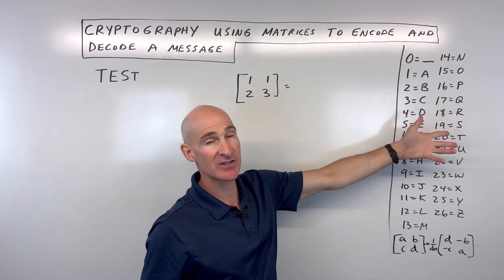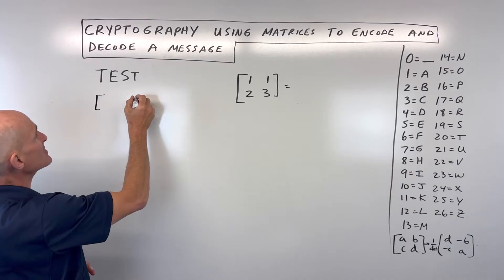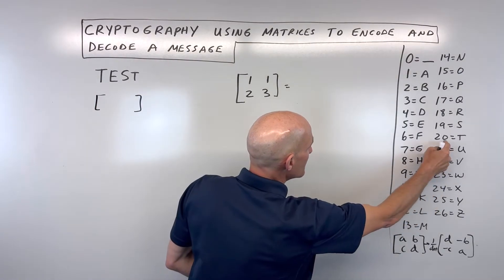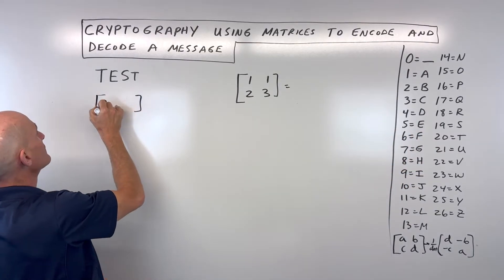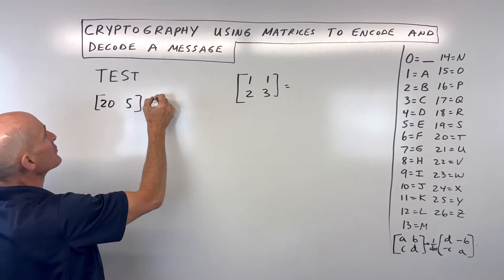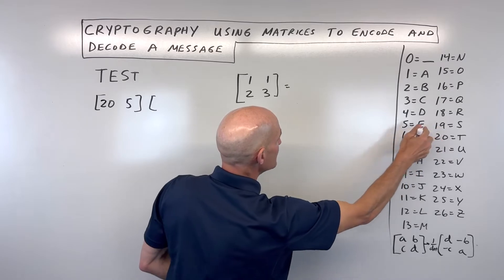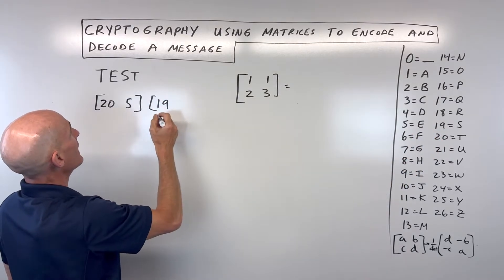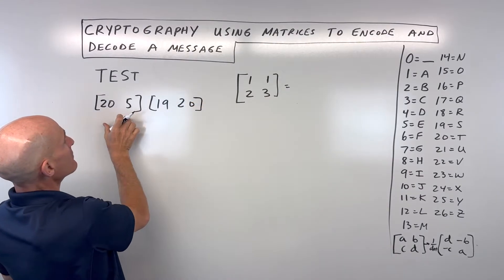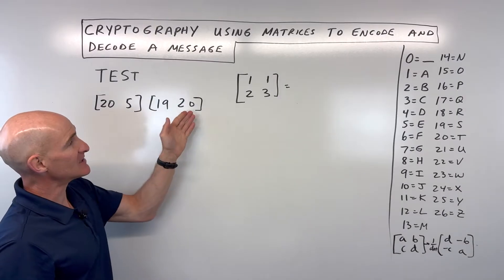First thing we need to do is assign a number to each one of these letters. If zero represents a space and one represents the letter A, two equals B, and so on, we're going to make these into little mini matrices. For example, T is the number 20, and E is the number 5. Let's make another matrix here. S is 19, and T is 20. So this is our message here: 20, 5, 19, 20.